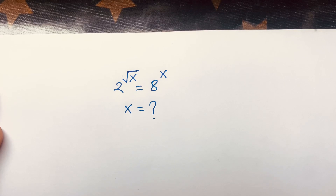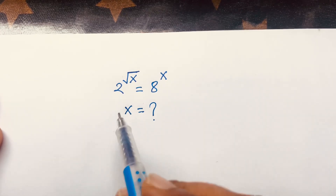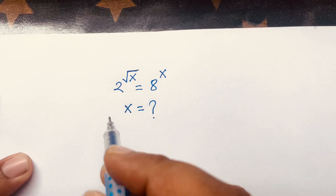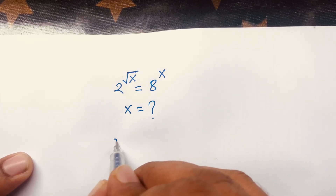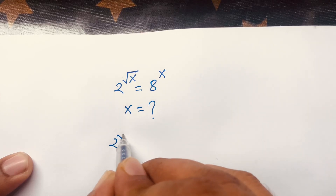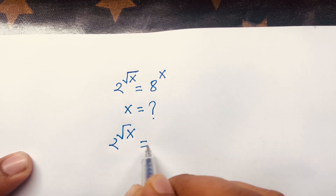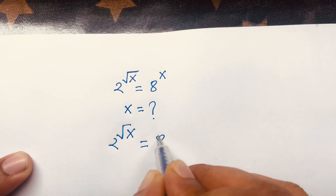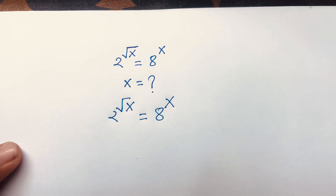How to solve this exponential equation: 2 to the power square root x is equal to 8 to the power x. We'll find out what is the value of x in this math question.